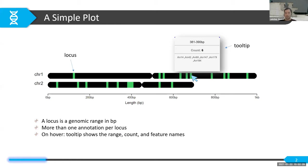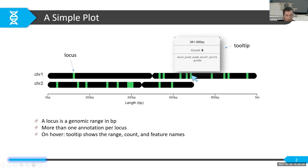The interactivity I was describing means that when you hover over loci, it shows a tooltip window telling you the base pair range of that locus, the number of annotations, and the names — which can also be linked to hyperlinks. For example, if it's a gene, you can link it directly to the NCBI gene database.